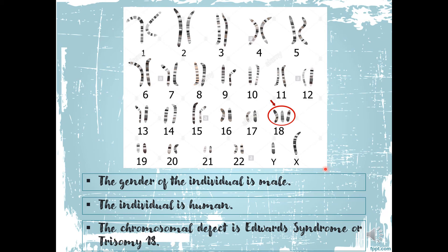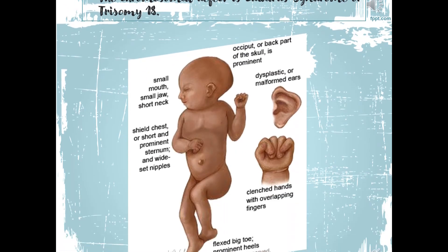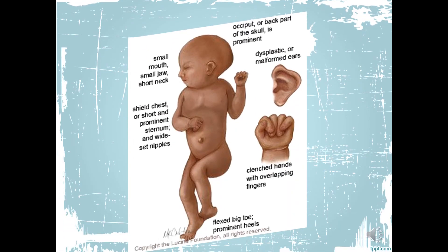If you count all of them, the normal number of chromosomes is 46, but because this one became three, we add one more — it becomes 47 chromosomes in this particular karyotype. Example of Edwards syndrome or Trisomy 18.